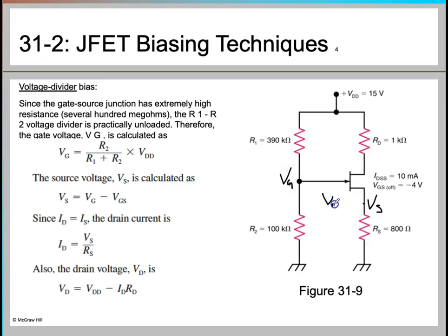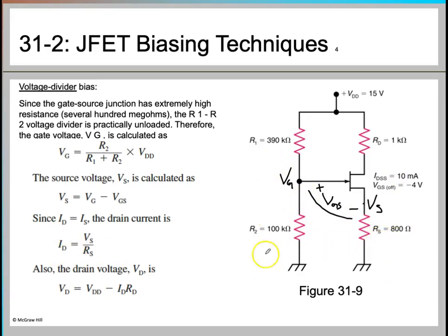Using the formula VGS equals VG minus VS, and since ID approximately equals IS because the gate-source junction has extremely high resistance, we can say that ID equals VS divided by RS. So in the voltage divider circuit, remember that the very high gate-source junction resistance makes ID approximately equal to IS.